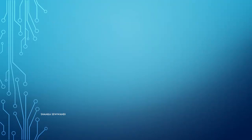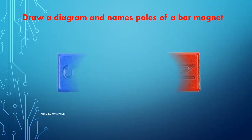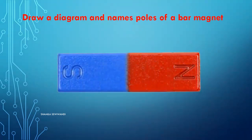Question: Draw diagrams and name the poles of a magnet. In this diagram, show the poles of a bar magnet — South Pole and North Pole.